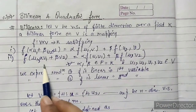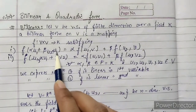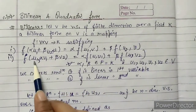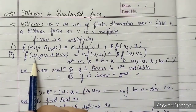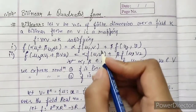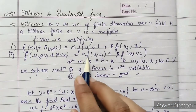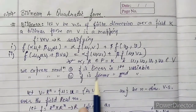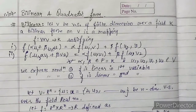The second condition: if you take u with (αv₁ + βv₂), you will get α·f(u, v₁) + β·f(u, v₂). These are the two conditions. Condition number 1 states that f is linear in the first variable, where u₁ and u₂ represent the first variable, and v₁ and v₂ represent the second variable.